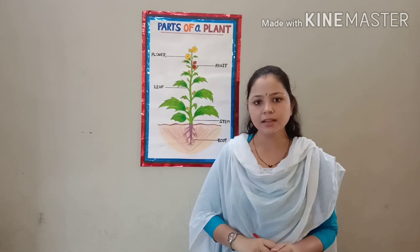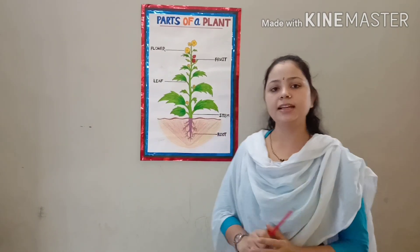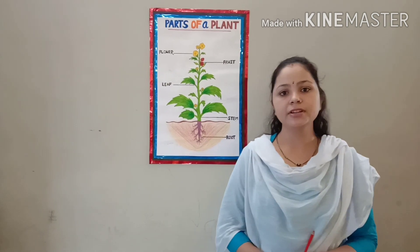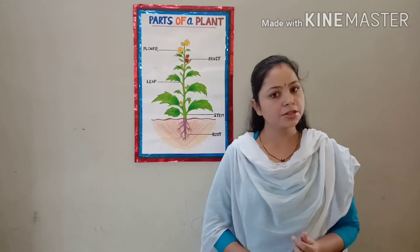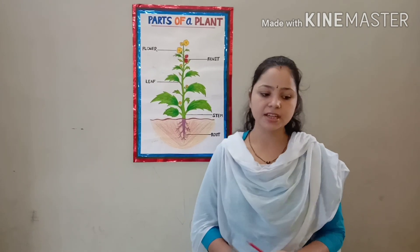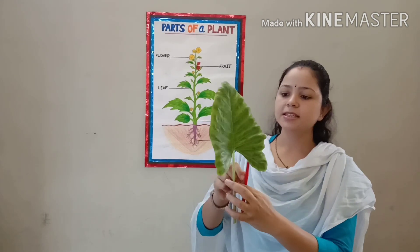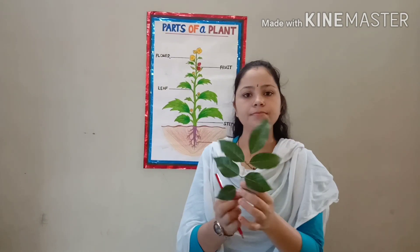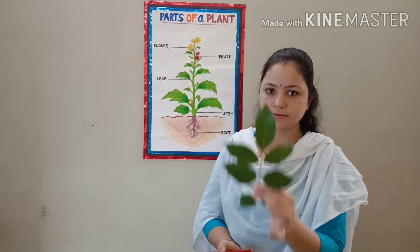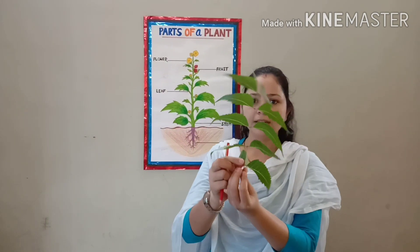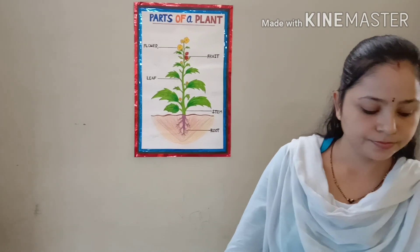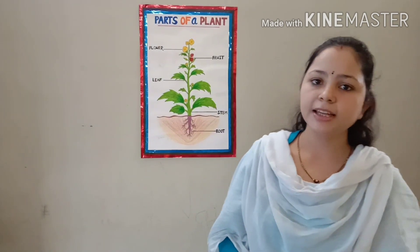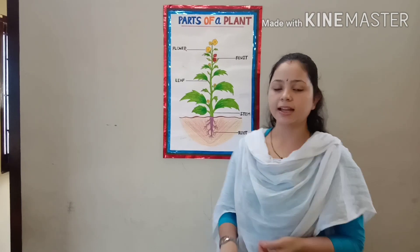Come to the leaf. Leaf is usually green in color. Leaves come in different shapes, sizes and colors. See the shape and size of the leaves. Neem leaf. So, leaves come in different shapes, sizes and colors.